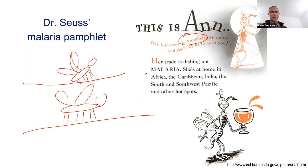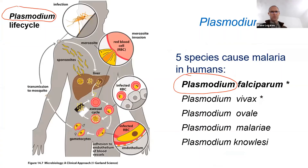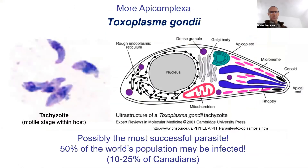So that is Plasmodium — don't forget that word. Plasmodium causes malaria, spread by mosquito. It's a real important disease worldwide. Back to what's going on in Canada — there's another Apicomplexa that is a very important parasite found in Canada.